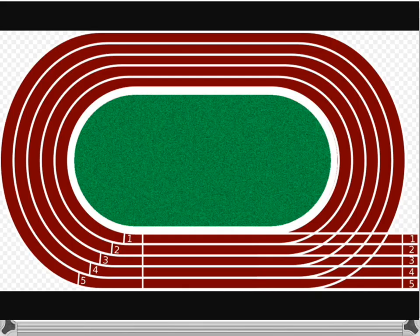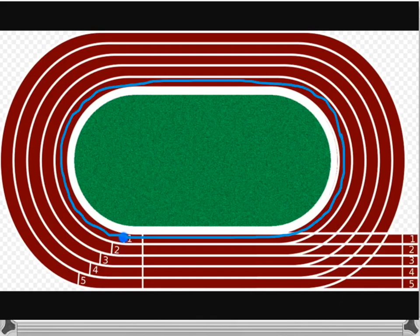Our first example is running on a track. Let's say that this is a 400 meter track — one lap around the track is 400 meters. We start at position one, and the blue dot represents you who's about to run around the track. We take our lap all the way around, which means we've gone a distance of 400 meters. It's a 400 meter track and we've gone around once, so we've traveled 400 meters.